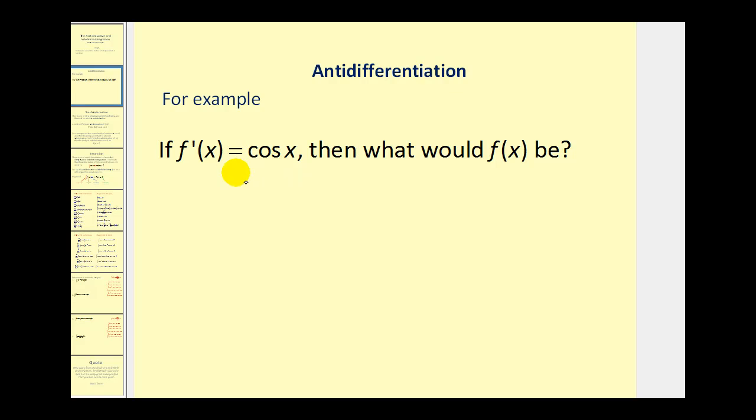Let's say we knew that the derivative function was equal to cosine x, but we wanted to know what the original function would have been. With some thought you could figure out that the original function must have been f(x) equals sine x, but actually there's an infinite number of functions that have a derivative of cosine x.